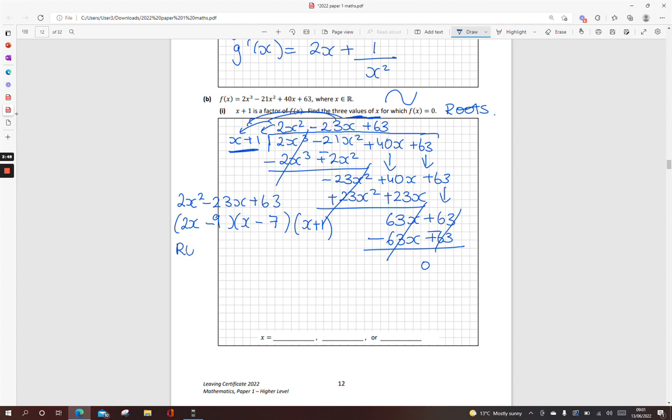To get the roots now, solve each of these. Let each bracket, let each factor equal to 0. So 2x minus 9 equals 0. This is the one you might make a mistake on. 2x equals 9, x equals 9 over 2. Your other one there, x minus 7 equals 0, x equals 7. And your final one, x plus 1 equals 0, x equals minus 1. So our three roots are 9 over 2 or 4.5, 7, and minus 1.